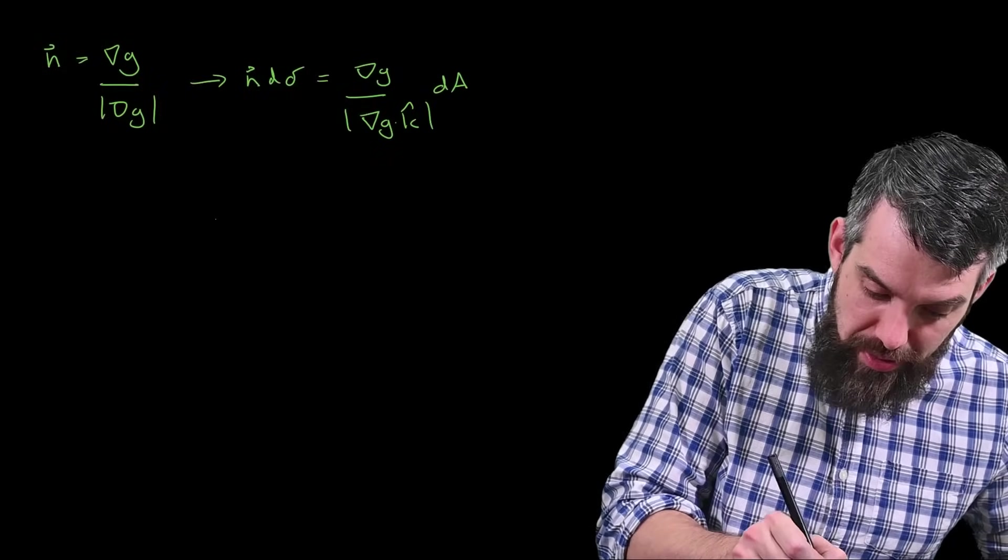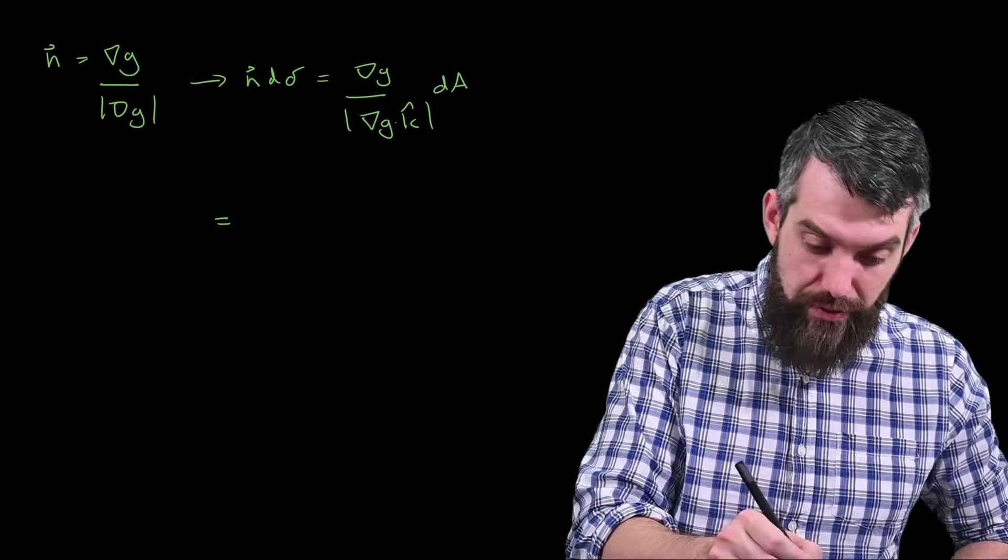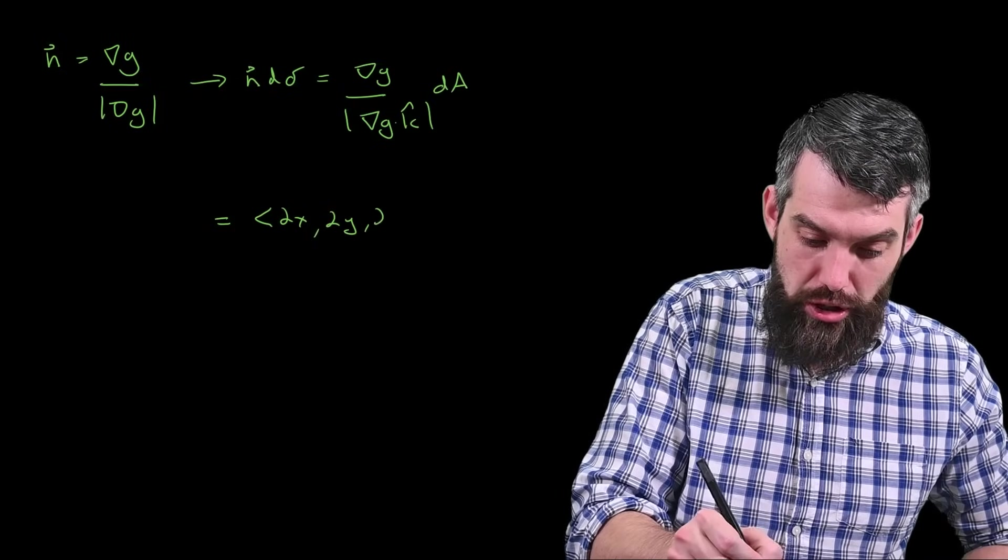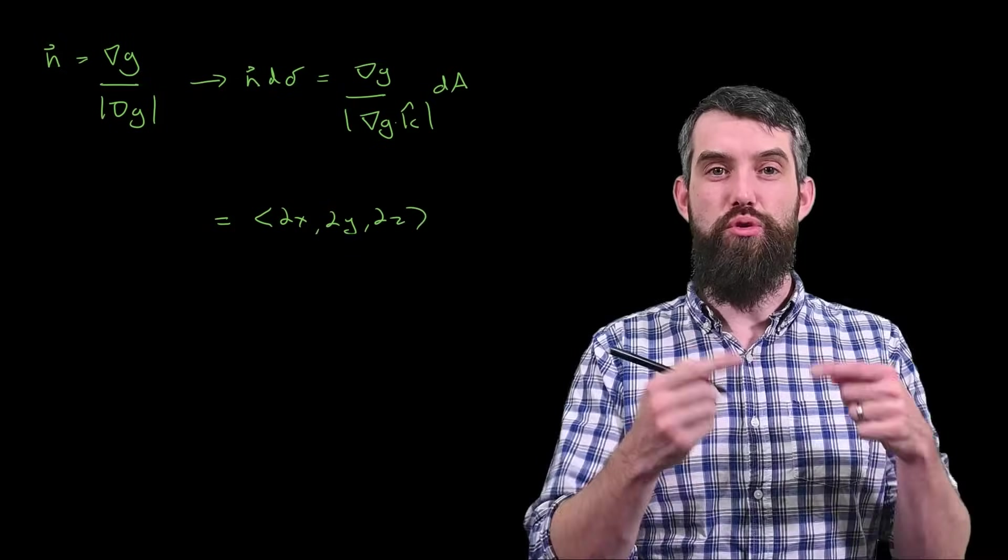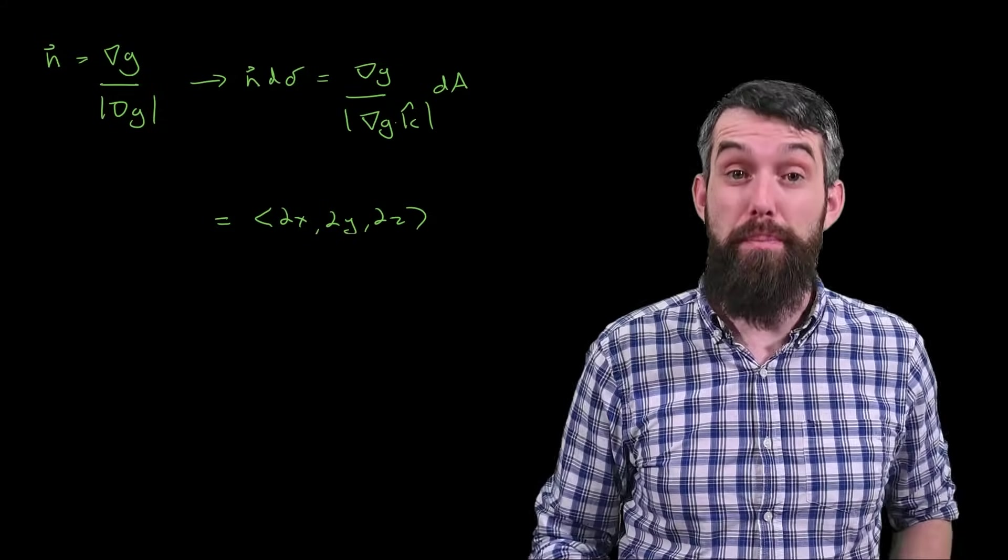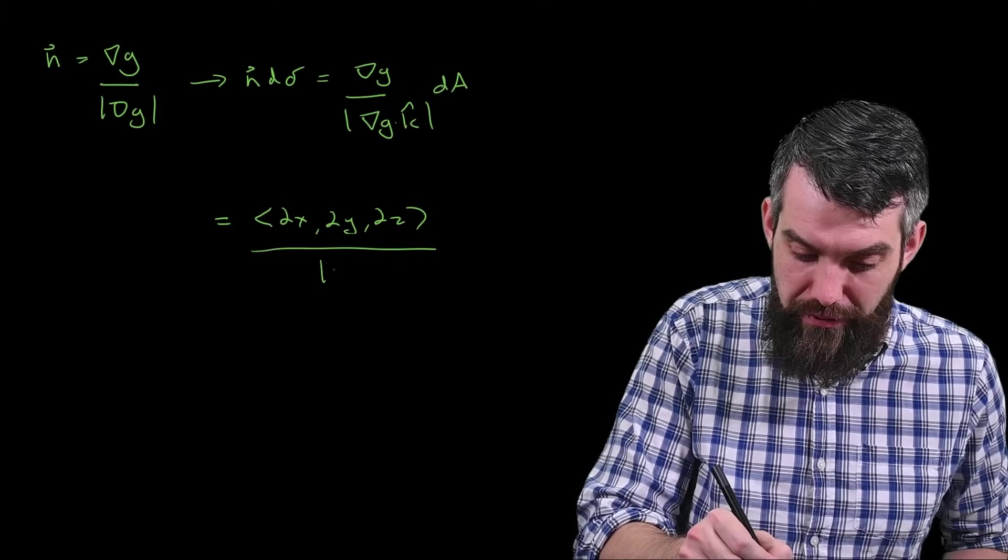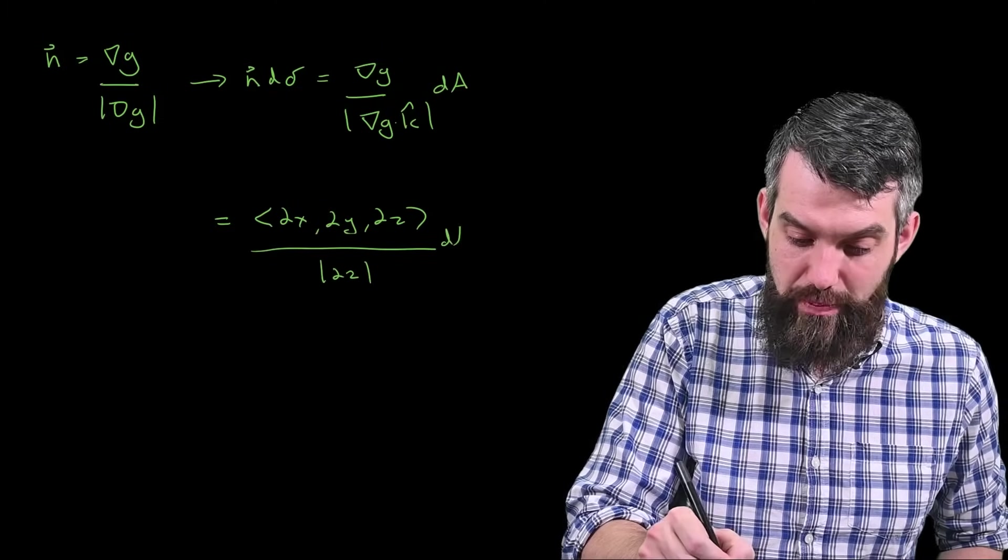Okay, so let's actually do that computation then. So the gradient of g is the vector 2x, 2y, and 2z. The gradient of g dotted with k-hat is just the third component of this, in other words 2z. So I'll divide out by the length of 2z, and then I'll still multiply this by the d-a.